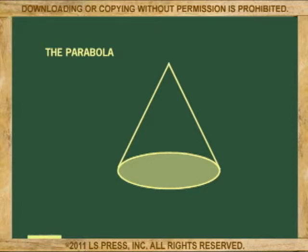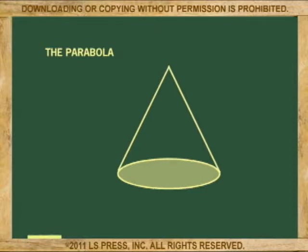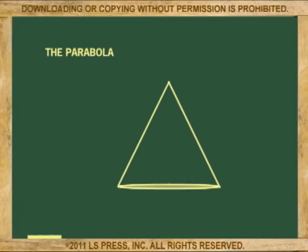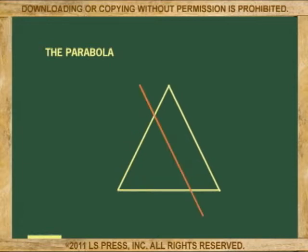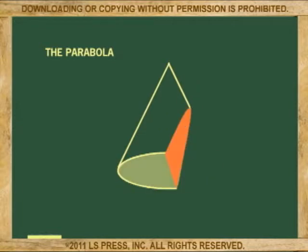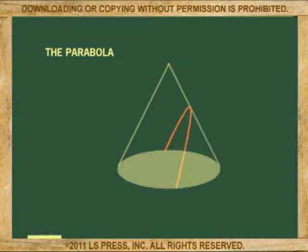First, let's review what a parabola is. Using a conic section, we see that it is the line represented by the edge of a slanted cut on a cone. Because the cut must be parallel to the surface or slope of the cone, then the parabola ends at the circle represented by the bottom of the cone.